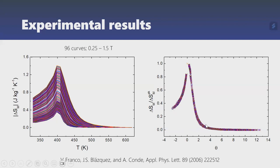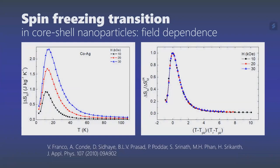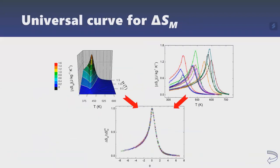Going to the lab: we have 96 different measurements for different field values, all experimental data. Rescaling in the same way, everything collapses nicely onto the universal curve. This works because this is a second-order phase transition. We applied it to other nanoparticles — an exotic case in collaboration with the University of South Florida involving a spin-freezing transition in core-shell nanoparticles — and again everything collapses naturally.